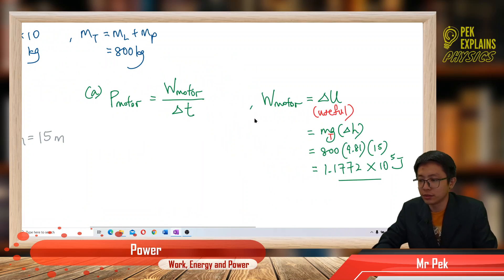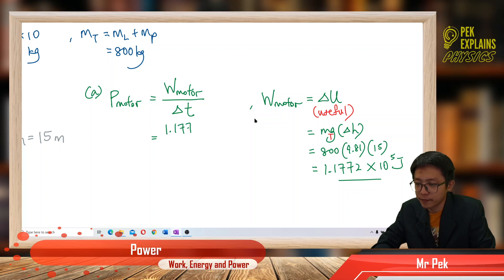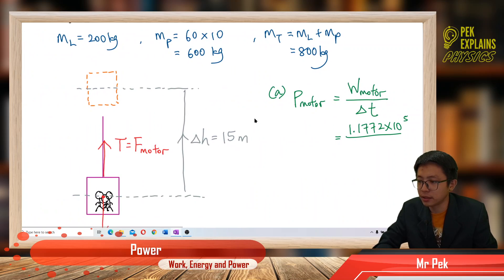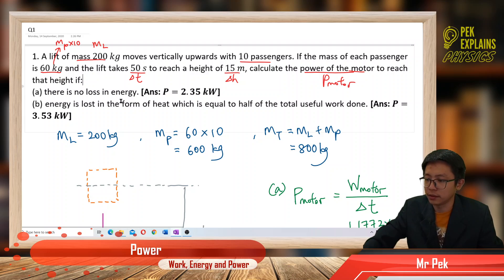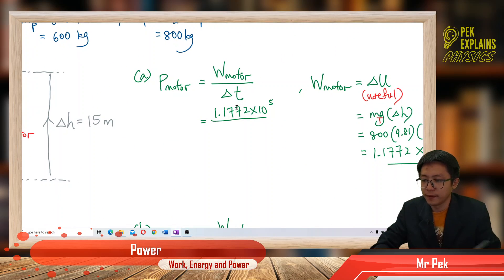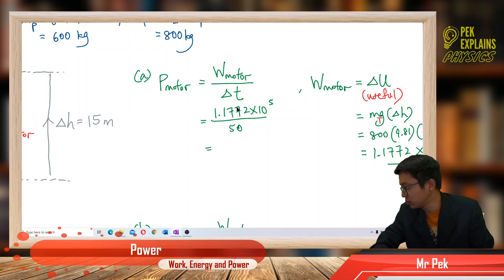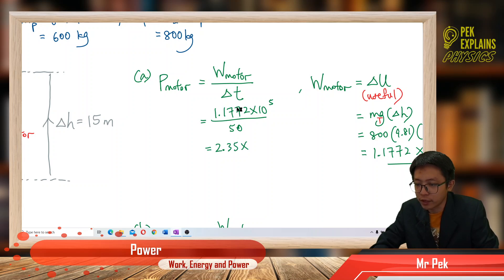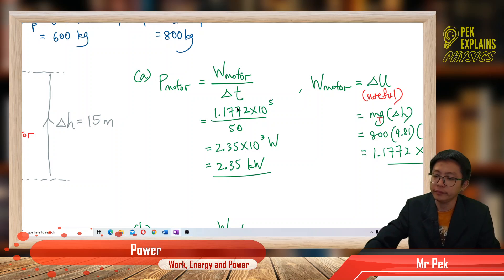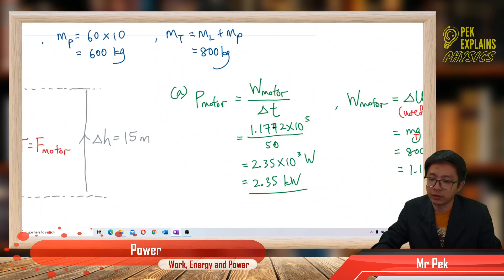Now that we have the work done by the motor, we can find the power. The time taken is 50 seconds — the motor used 50 seconds to pull the lift up. So the power of the motor is 1.1772 × 10⁵ divided by 50, which equals 2.35 × 10³ watts, or 2.35 kilowatts. That is the answer for part A.